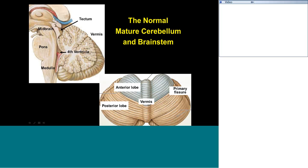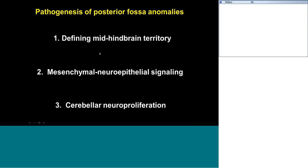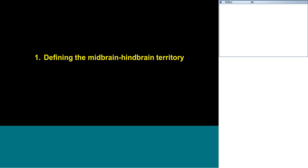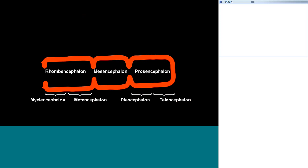This is where we're trying to get to when we're in development. I'm going to talk about normal and abnormal development from three broad perspectives where there's been progress in recent years: defining the midbrain-hindbrain territory, which is a fundamental step in this process; mesenchymal neuroepithelial signaling and its disorders; and then neuroproliferation — the various cellular compartments of the cerebellum. Starting off with midbrain-hindbrain territory definition.